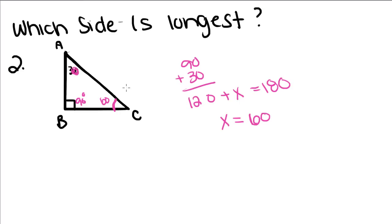So the side that is opposite the largest angle is going to be longest. So since this angle right here is the largest, that means side AC is the largest.